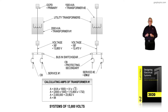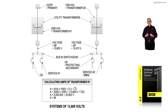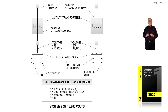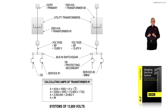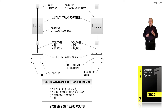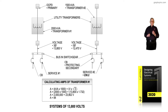This illustration deals with systems of 13,800 volts used in usually larger industrial plants and facilities. Notice the transformer to the left is a 2,000 kVA, three-phase, 13,800 volt. To determine the calculating amps of transformer number one, we take the kVA times 1,000 divided by the voltage times the square root of three. When the math is done, that gives us 84 amps.